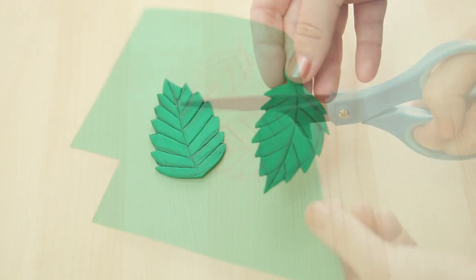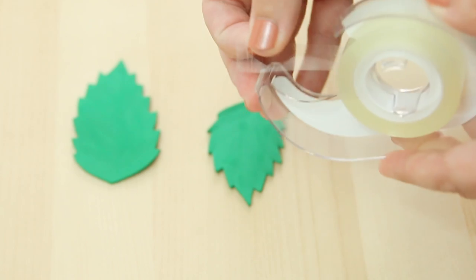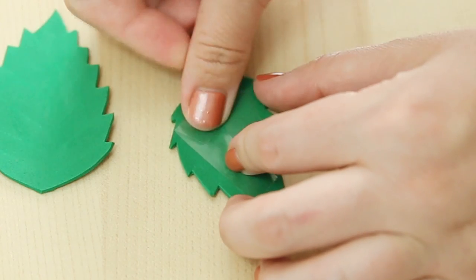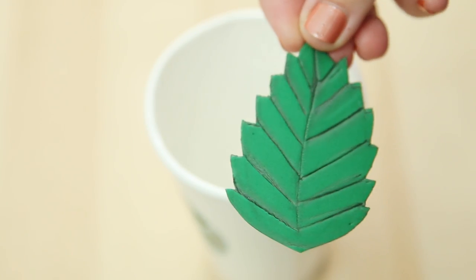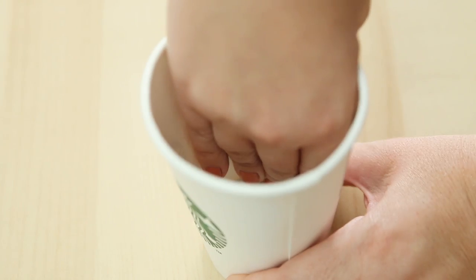Then trim those out and on the back of the leaves, add pieces of double-sided sticky tape. Then with the leaf design facing in toward the center of the cup, stick them inside.